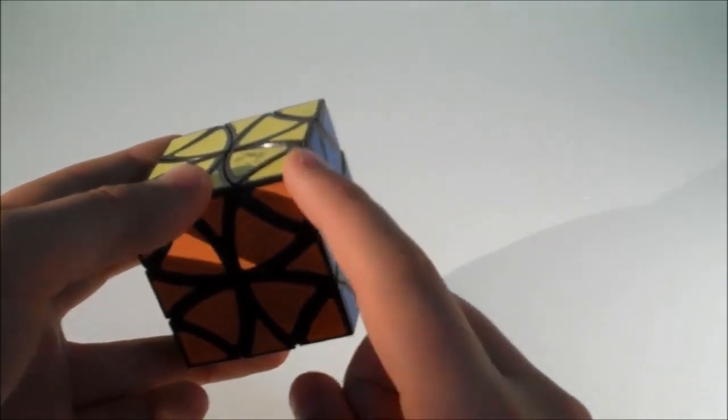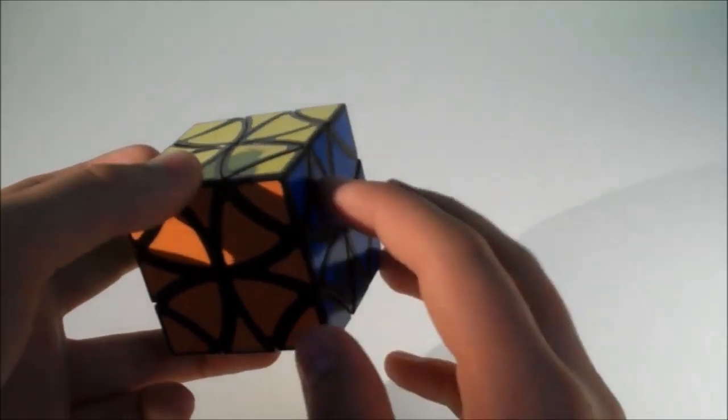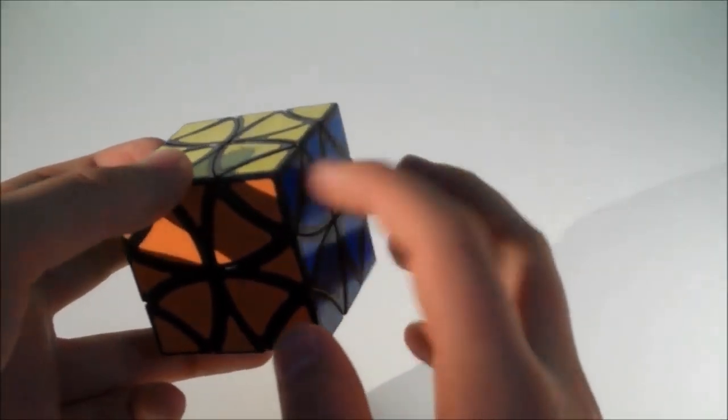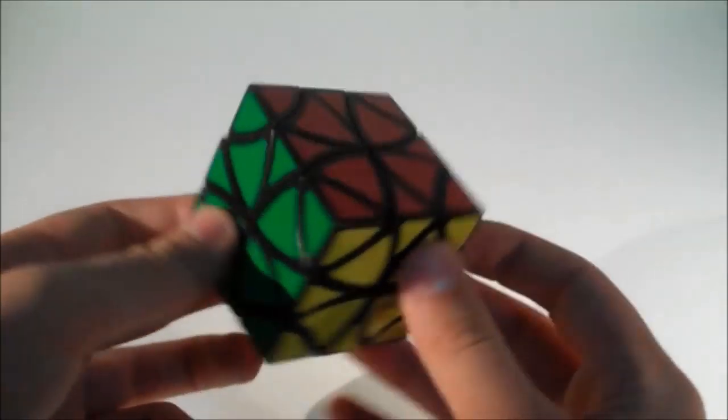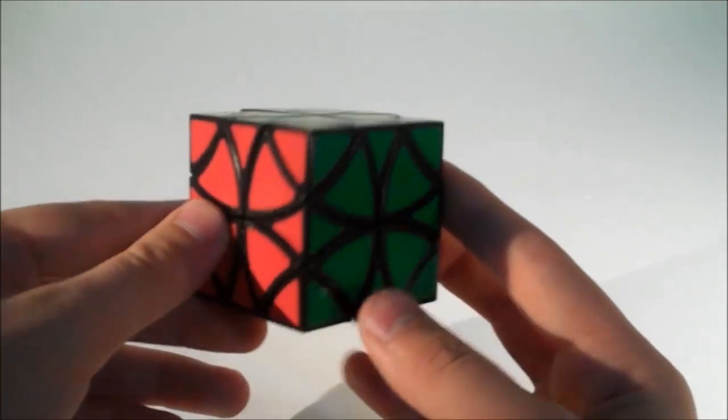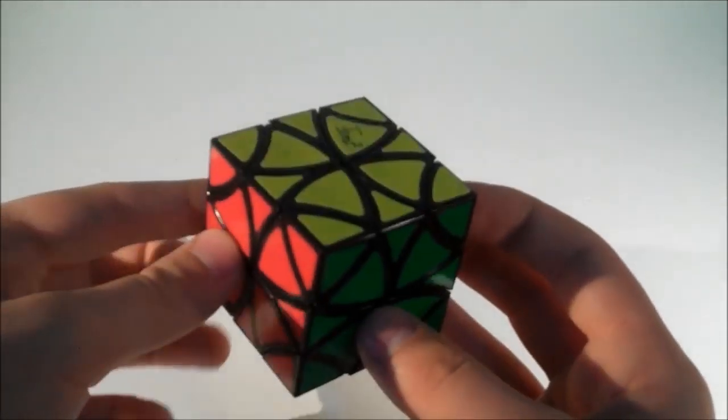And I know that this goes in the yellow, orange and blue slot because we have yellow, orange and blue on it. So eventually I would be able to solve this because I know where the pieces should go and therefore I can get them into that place.